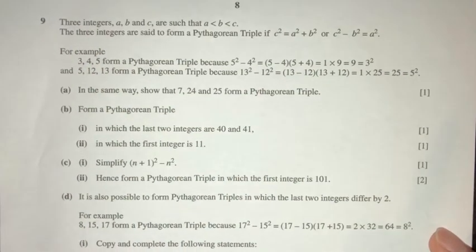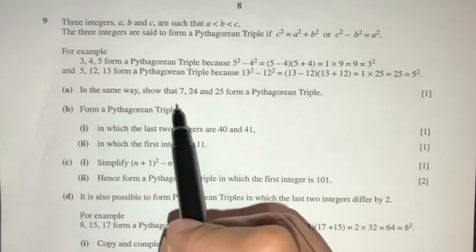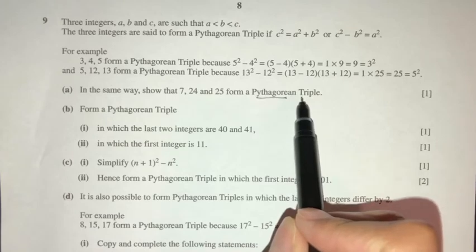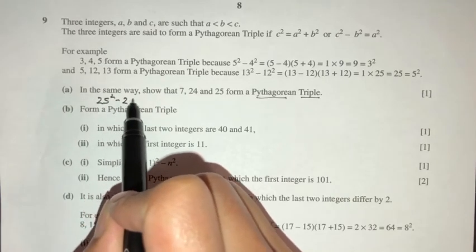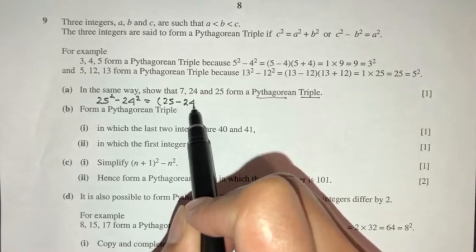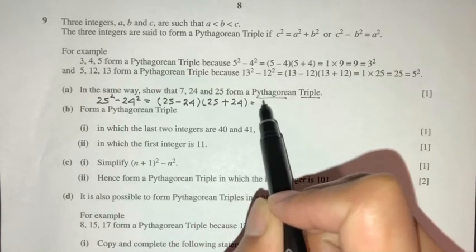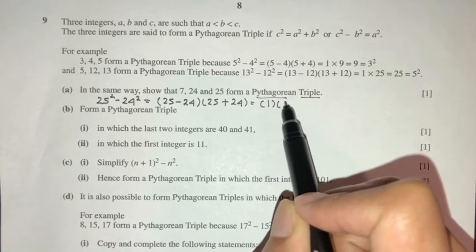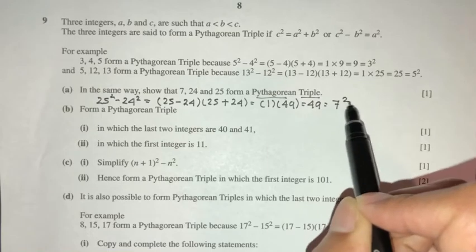For part 1, show that 7, 24, and 25 form a Pythagorean triple. Same way, take the biggest numbers: 25 squared minus 24 squared equals 25 minus 24, times 25 plus 24. That equals 1 times 49, and 49 equals 7 squared. So this is shown as required.